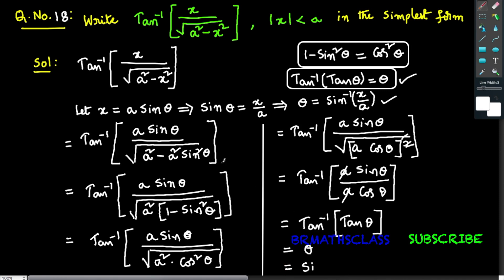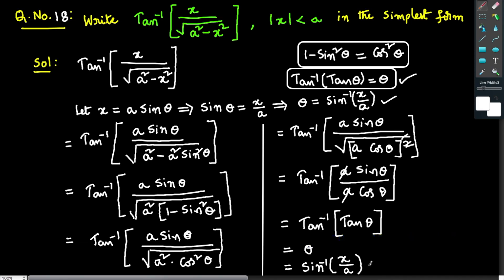Since we took x equals to a sine theta, theta equals to sine inverse of x by a. So in place of theta, we write sine inverse of x by a. Therefore, the simplest form of tan inverse of x divided by square root of a square minus x square is sine inverse of x divided by a.